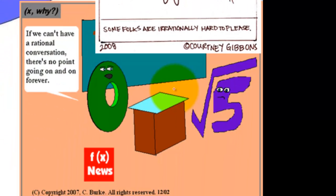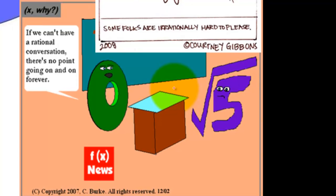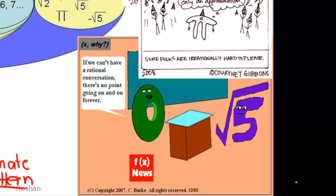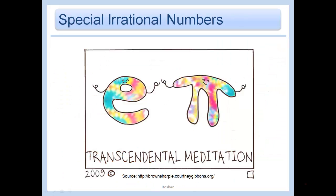Then we have the other one that says, if we can't have a rational conversation, there's no point going on and on forever. So he says that to root 5. Root 5 is an irrational number. His decimal goes on and on forever, with no distinct pattern, of course. We go to some special irrational numbers. These are called transcendental numbers. They're a special type of irrational numbers, as we said. We'll learn more about these at a later time. We're going to learn a little bit more about what's so special about e and pi. Stay tuned.